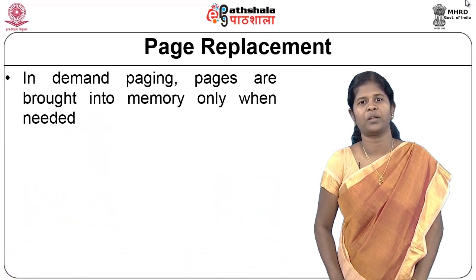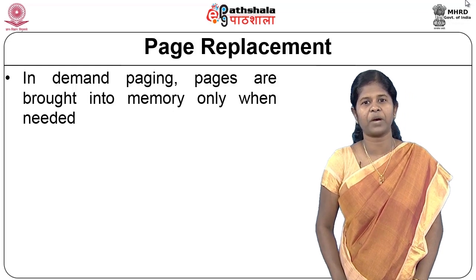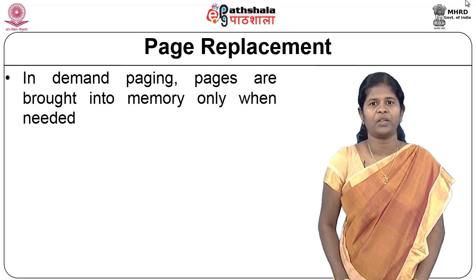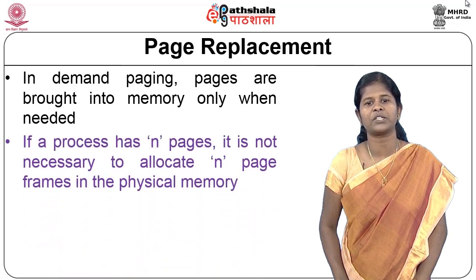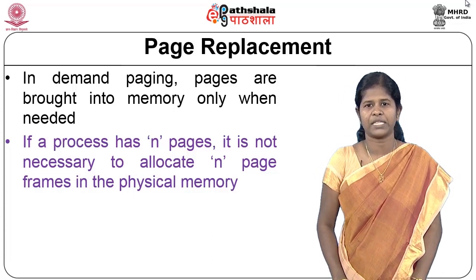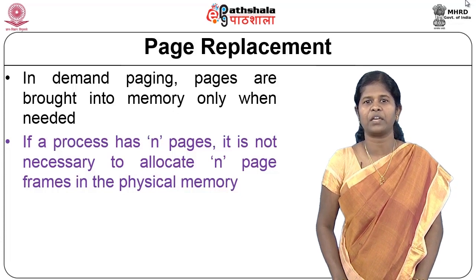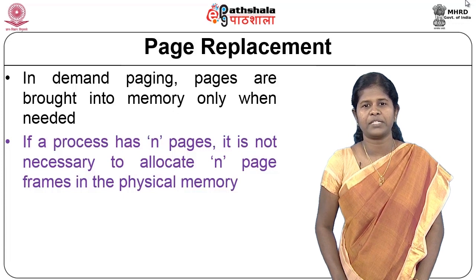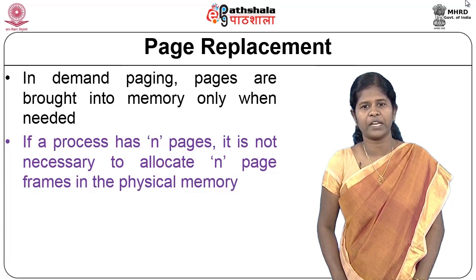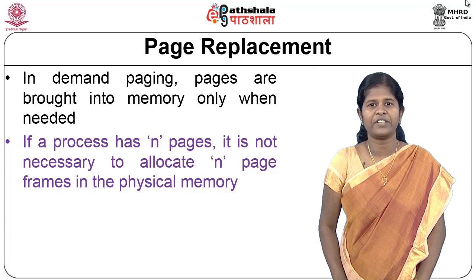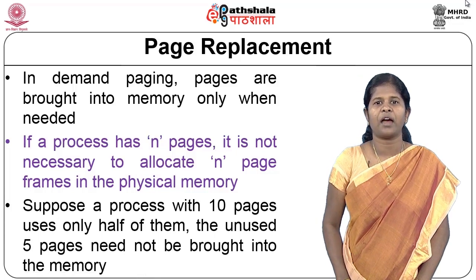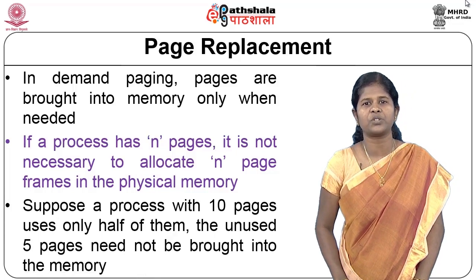In the previous module, we learnt what is meant by demand paging. In demand paging, pages are brought into memory only when they are needed. A particular process can have many pages, but all the pages need not be present in the memory at the same time. It's enough for only the pages currently in use to be kept in memory. If a process has n pages, it is not necessary to allocate n physical frames — only a few frames need to be allocated to that process.